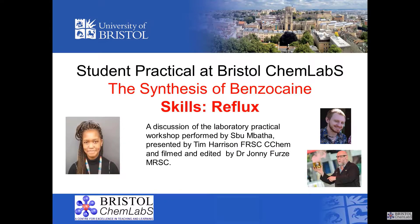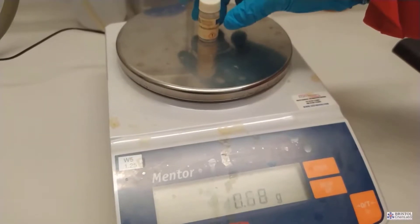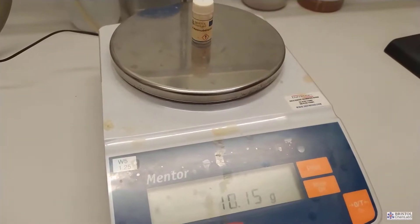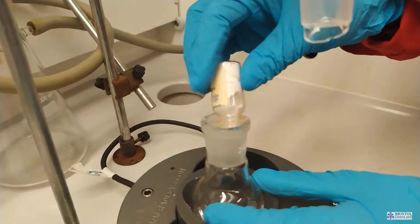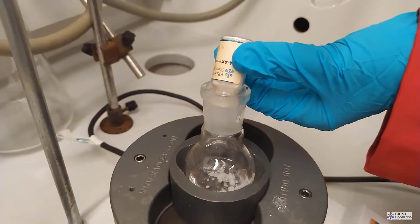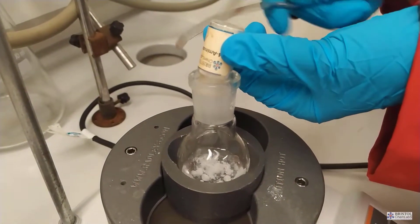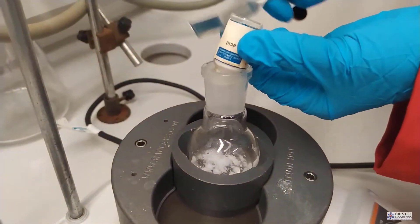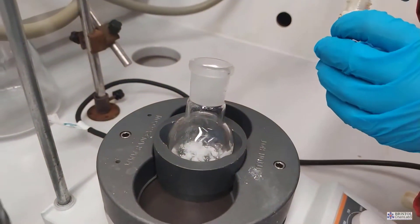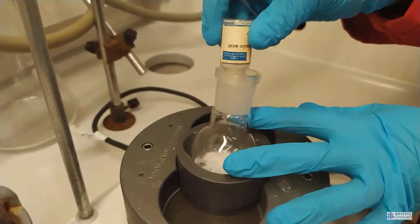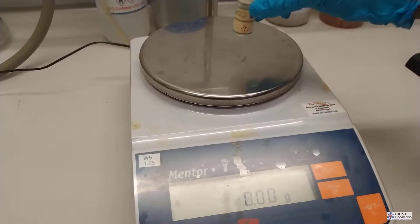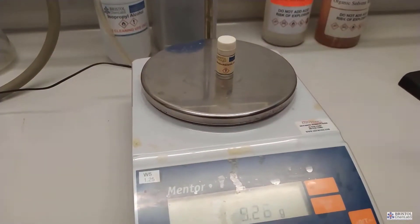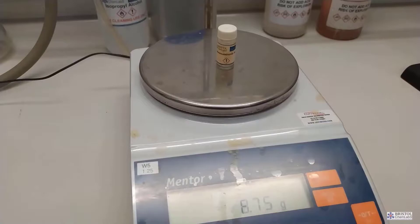To start the experiment we need to weigh out our starting materials that are not in excess. In the round bottom flask we already have the ethanol, a reagent in excess, and its catalyst concentrated sulfuric acid. The 4-aminobenzoic acid is the reagent that isn't in excess so it needs to be accurately weighed if we're going to perform a percentage yield. To start we weigh the small container that contains the 4-aminobenzoic acid. We then empty this container into our reaction vessel and weigh the empty container. The difference in the weights leads us to the mass of 4-aminobenzoic acid we actually have in the reaction.